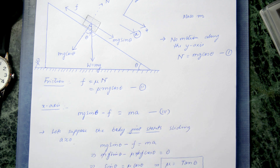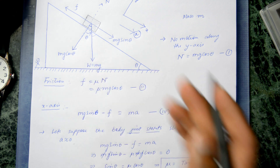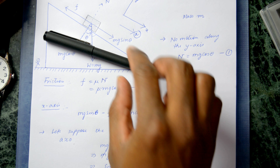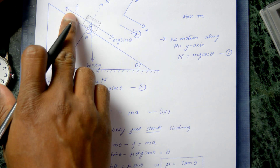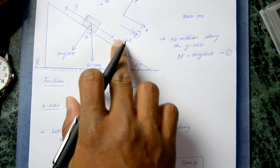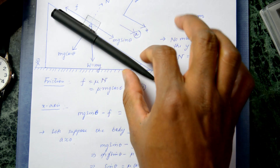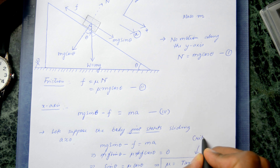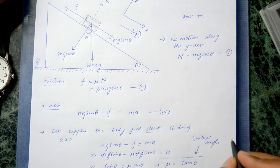So the critical angle θc is the angle at which tanθc equals the coefficient of friction μ. If the angle is less than the critical angle, friction is sufficient to prevent motion. If the angle exceeds the critical angle, sliding motion will occur. This is the condition for the critical angle.